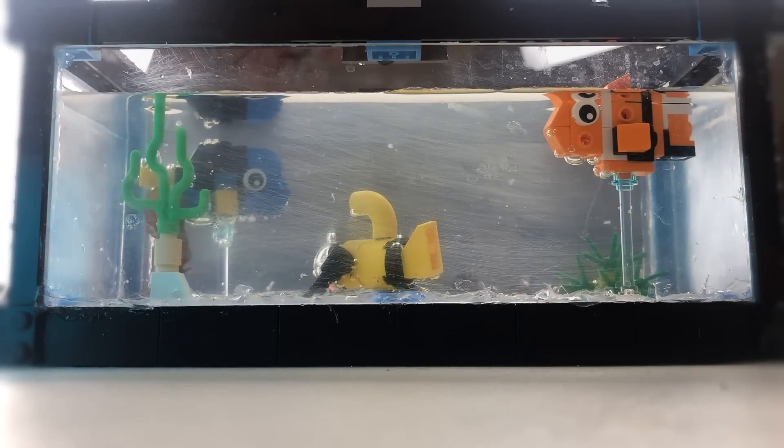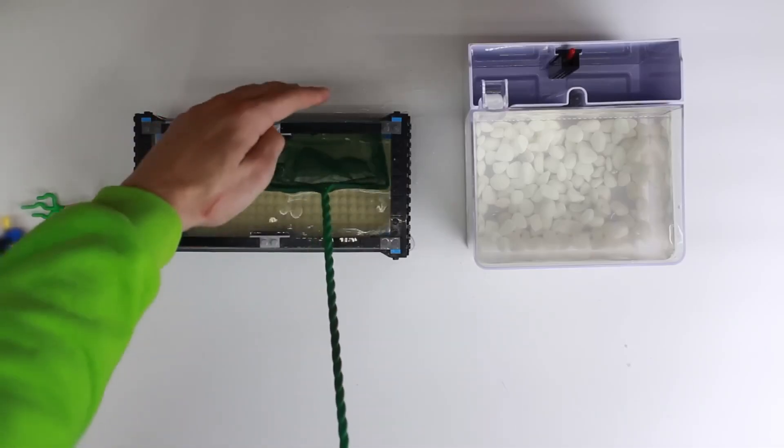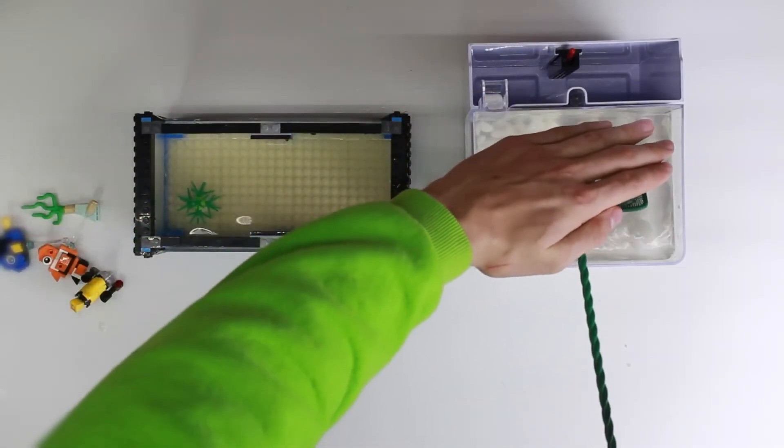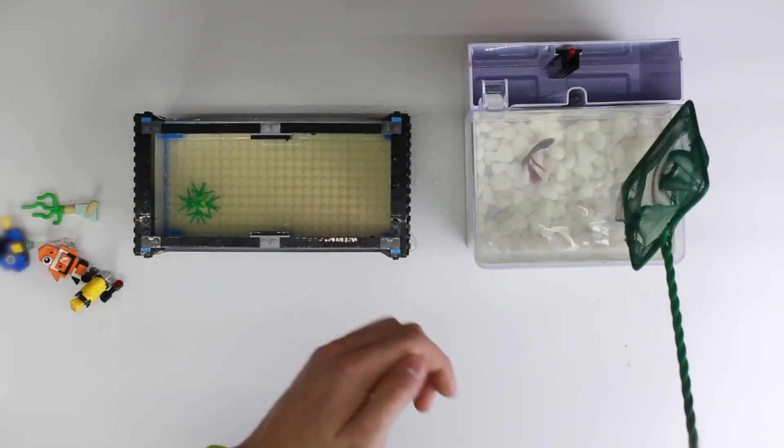But seriously, LEGO is not the best material for building an aquarium. Its tightness leaves something to be desired. Also, I used a huge pile of sealant, but the water finds its way out of the aquarium and it started leaking. So I had to return the fish to its old apartment so as not to put it in danger. The aquarium from LEGO can be created, but needn't be. Today that's all. Thanks everybody for watching. Goodbye.